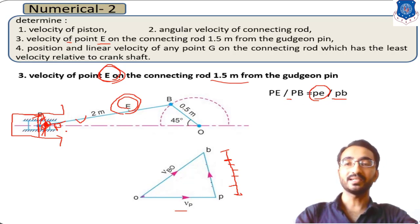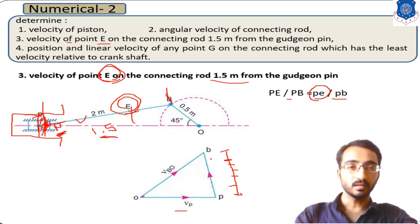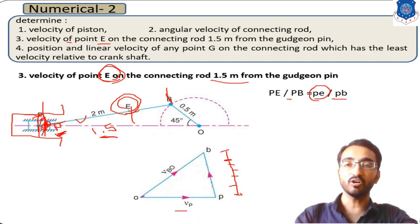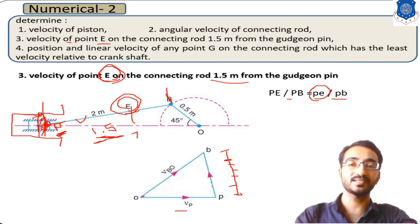The length from point P to point E is 1.5 meter in actual dimensions. The length of PE on the velocity diagram corresponds proportionally such that the point E appears at 75% of the total distance — since 1.5 out of 2 meters means 75% of the connecting rod length is covered from P.